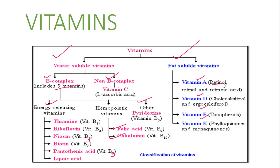Now for fat-soluble vitamins and their chemical names: vitamin A — retinol and retinoic acid. Vitamin D, vitamin E, and vitamin K — phylloquinone and menaquinone. These are the chemical names of the fat-soluble vitamins.